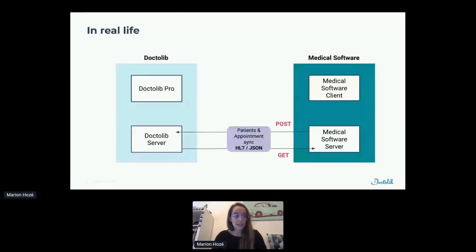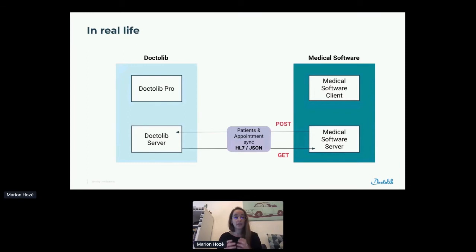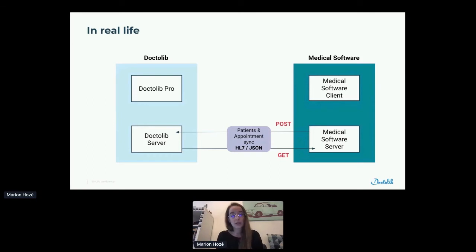We synchronize mostly patient and appointment information because this is the kind of information we have in Doctolib — we don't have medical information in Doctolib, so that's not something we can transfer to the medical software. In real life, an appointment is booked for a new patient in Doctolib — either by the patient on the website or directly in the practice by the secretary or doctor. That creates a message in the waiting list for us, and the medical software will just do a GET to copy this patient and appointment into the medical software, almost in real time. When the patient arrives, the secretary or doctor checks the appointment and patient administrative information in Doctolib, maybe does some updates that are copied into the medical software, and changes the status of the appointment — for example to 'in waiting room' — which is also transferred to the medical software.